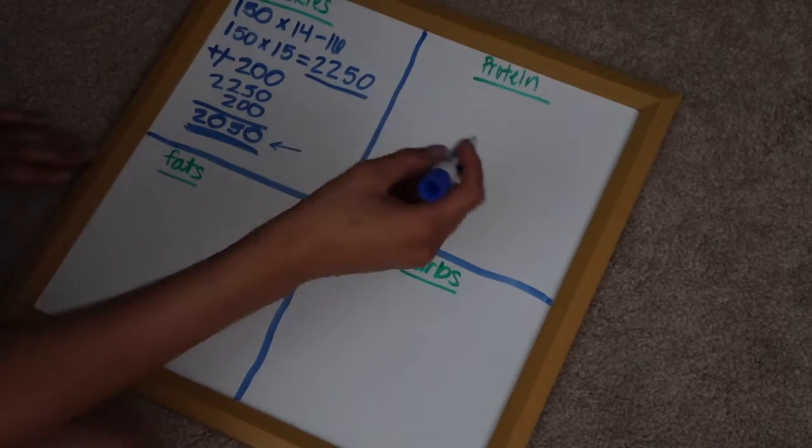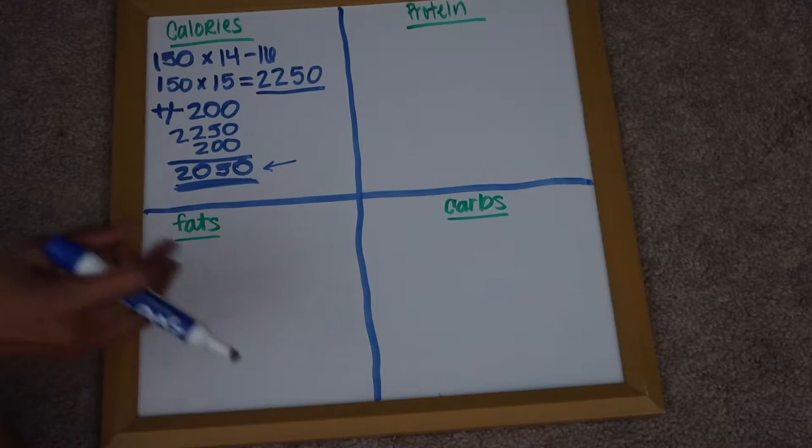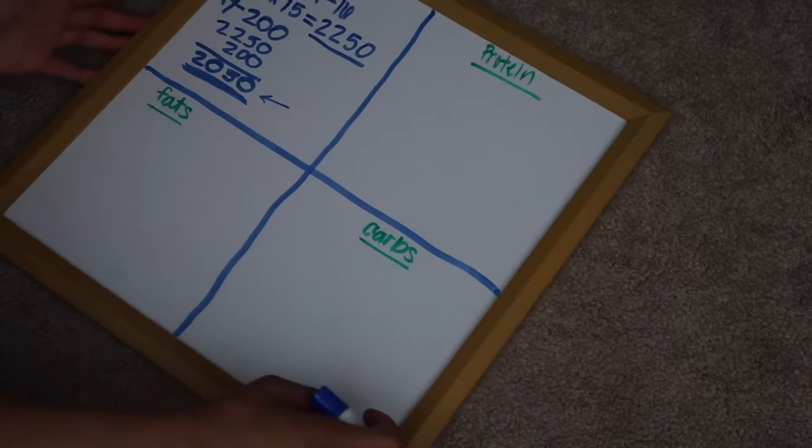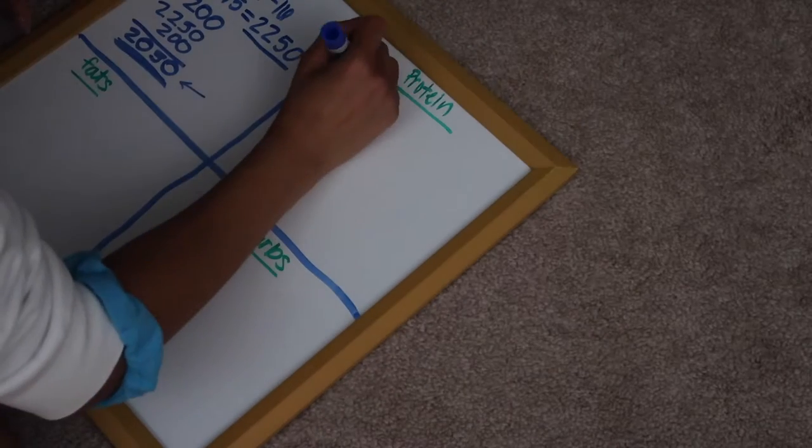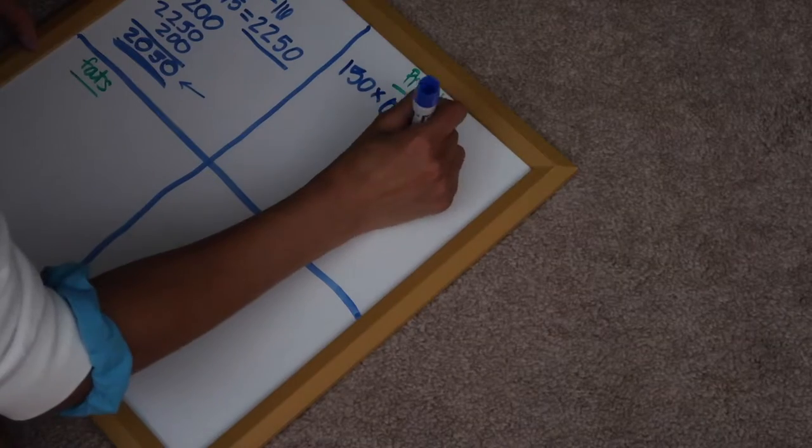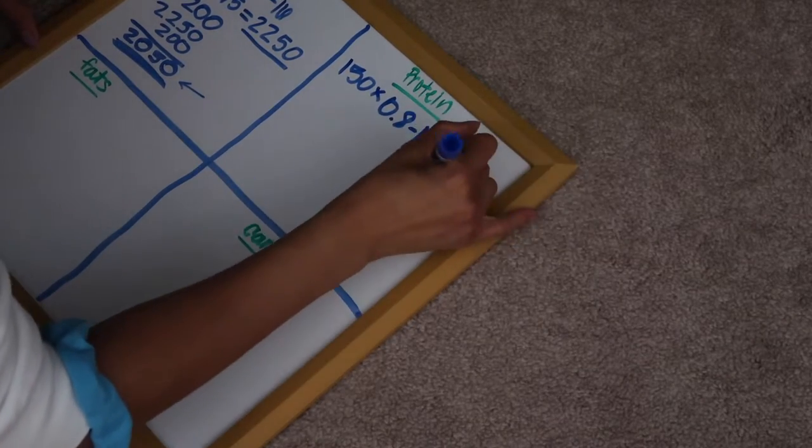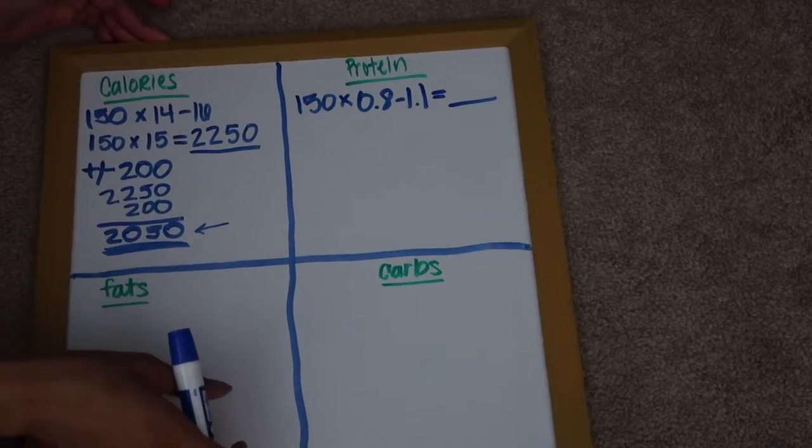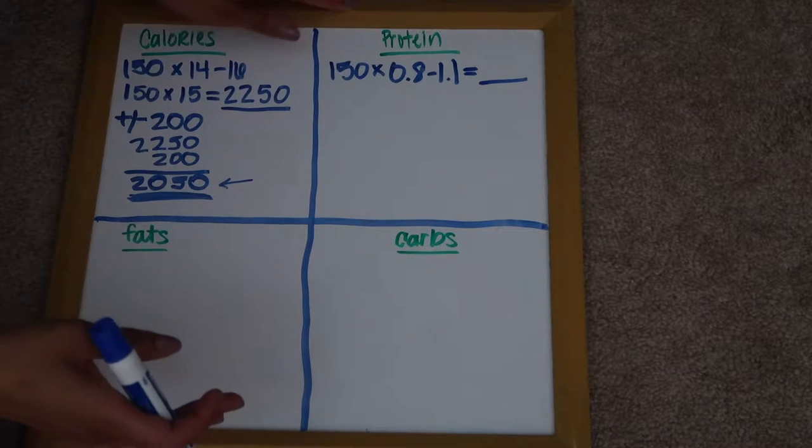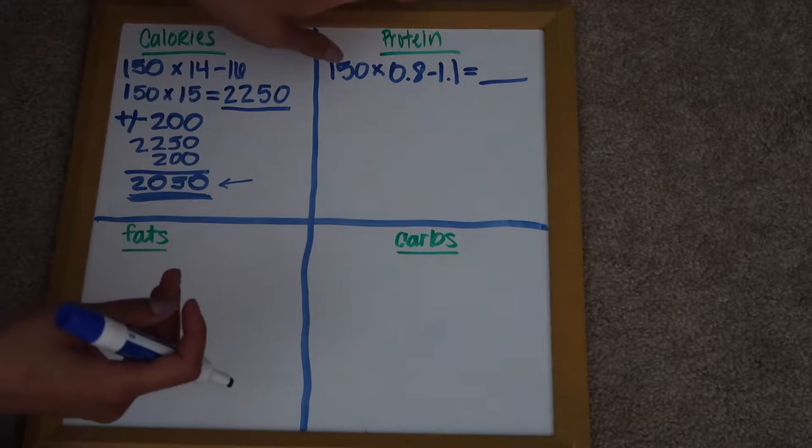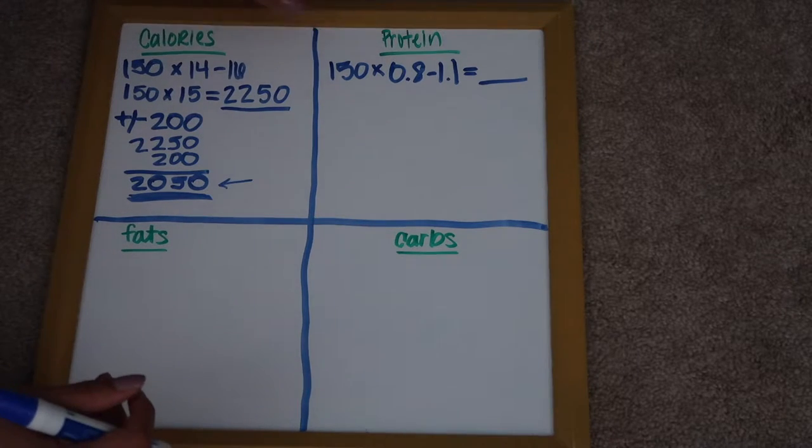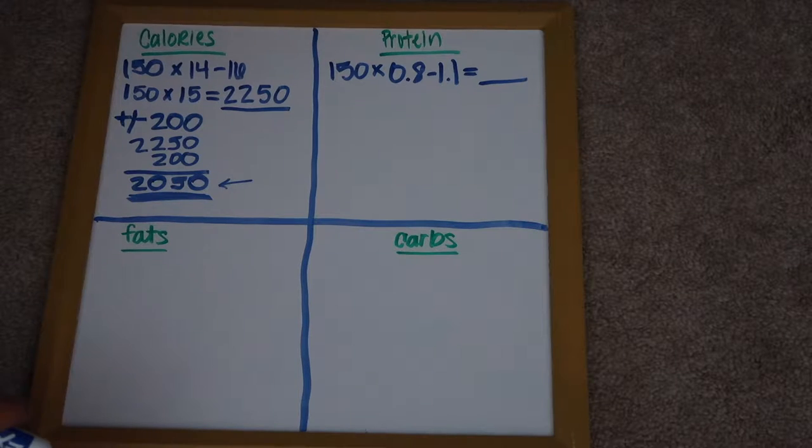So we're going to move over here to protein. So for protein, you have a range of 0.8 to 1.1. And that range is there depending on how much protein do you need in your diet. If you are a super duper lean person, if you're mostly lean, you would go with a higher number because the more lean you are, the more muscle you have, the more protein you'll need. So you'll be at that 1.1 area.